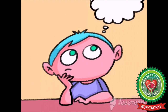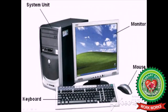Think about it. As you know, a computer has four main parts: monitor, mouse, keyboard, and system unit or CPU. So we will use the keyboard to write on the monitor.